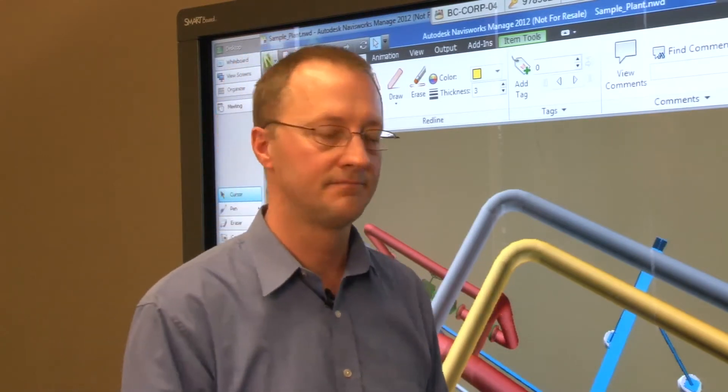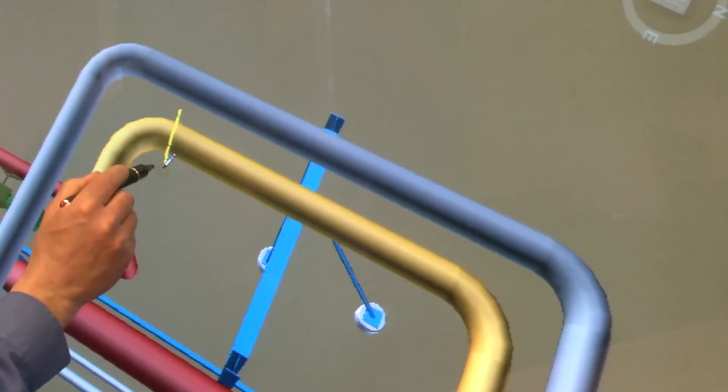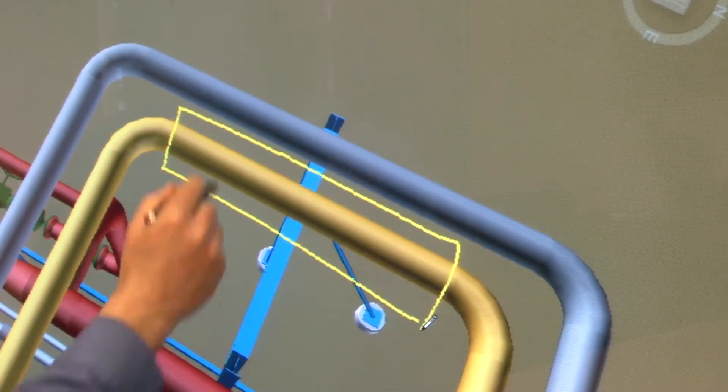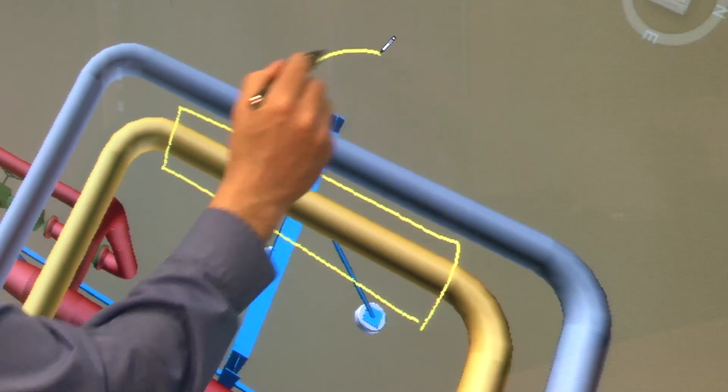Any notes that you write on the model are now captured as part of the Navisworks file not as a separate ink layer. This integration of the pen tray pen with the Navisworks markup tool helps you capture and manage notes more effectively during a design review.